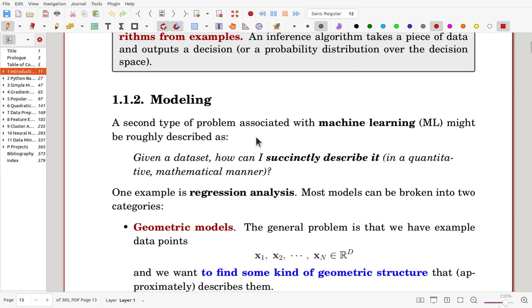let's go to modeling aspect. Second type of problem in machine learning can be described in this way. Given a data set, how can I succinctly describe it? To describe the data set, now you have to produce model. You have to select model. And by using data set, you can get best fitting model. So, one example is regression analysis.